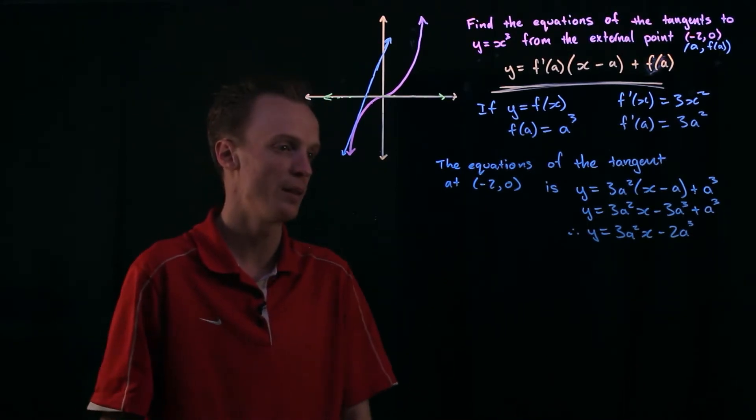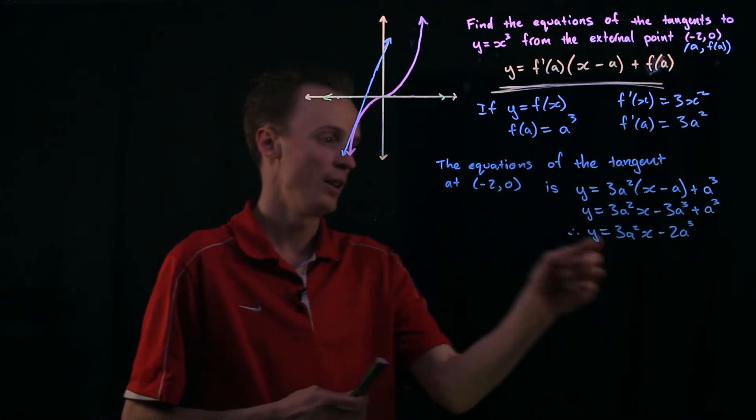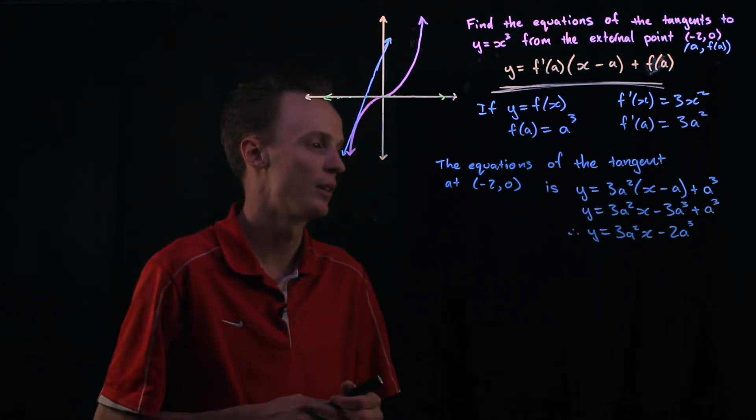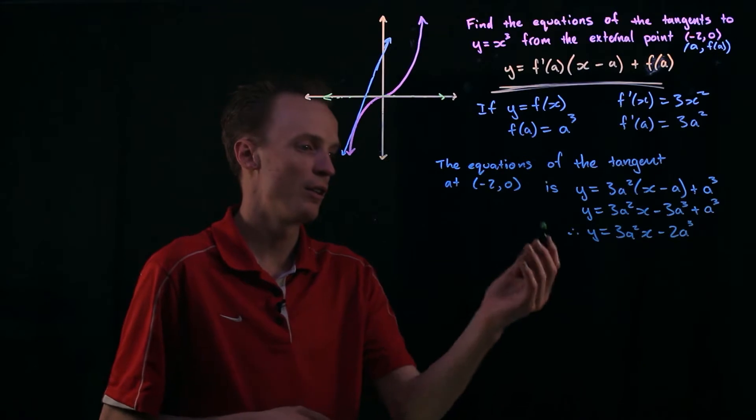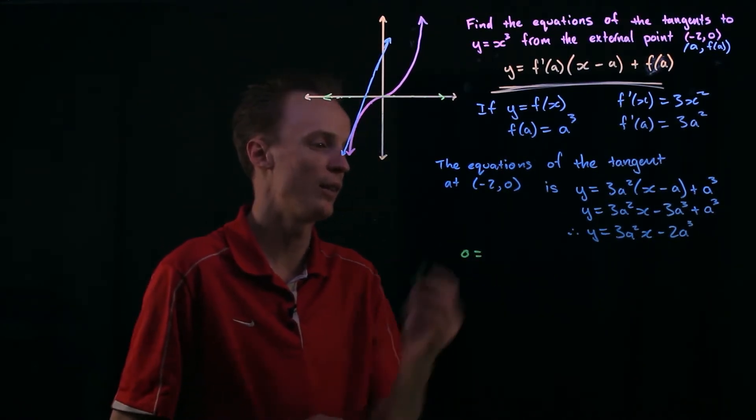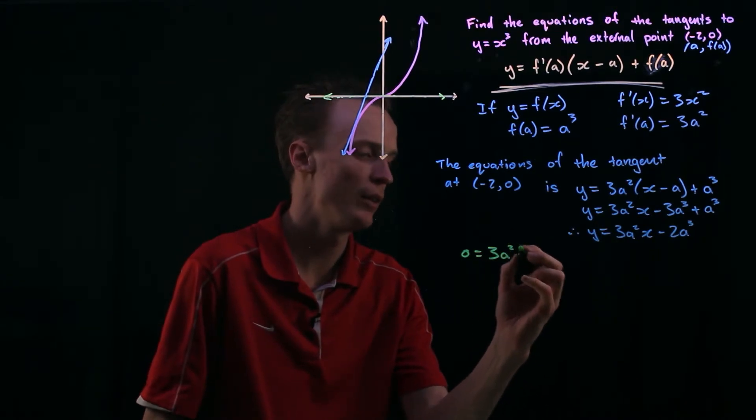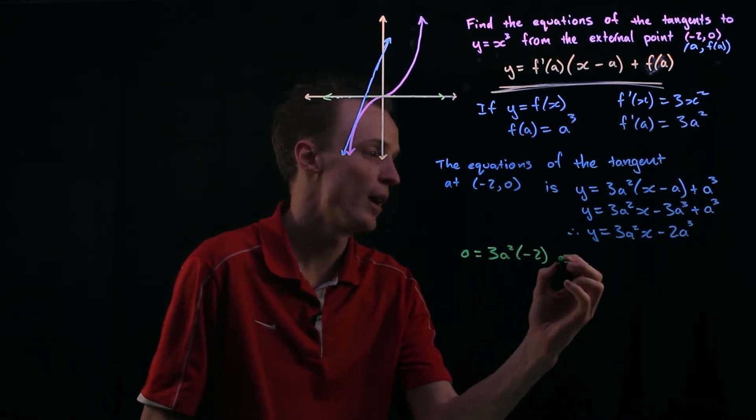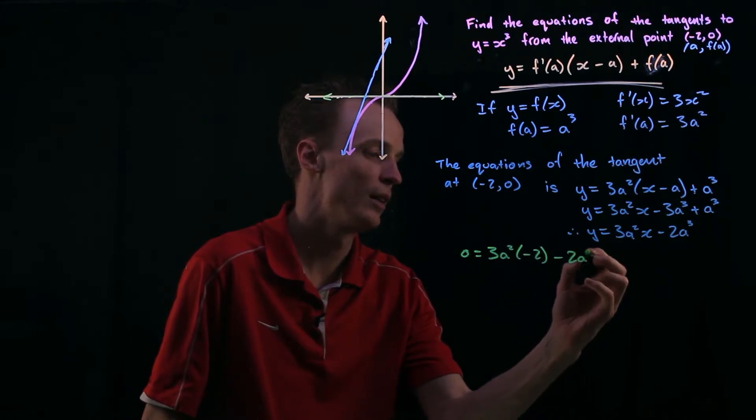So what I'm going to do here is I'm going to substitute negative 2, 0 into this function here. So when I do that I know that my y is going to be 0 when my x is negative 2. So this will be 3a squared times negative 2 take 2a cubed.